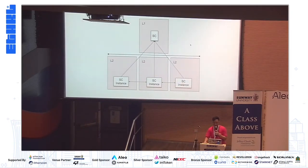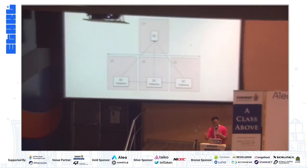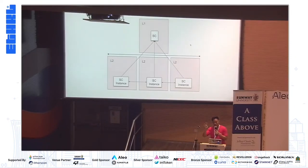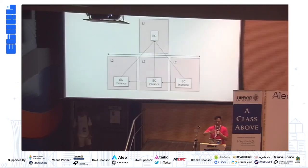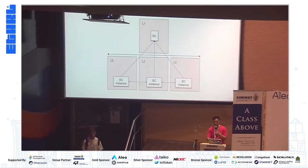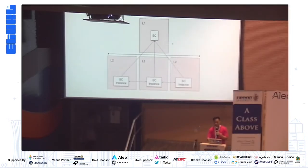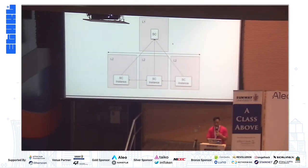Like all other L2s, Taiko also wants to have a super chain, and we call it the Taiko Singularity. With the same concepts in mind — whether it's the delegate call or the shared sequencer — we want to parallelize the deployment of L2s to scale Ethereum. This diagram is pretty common across most L2 super chains.